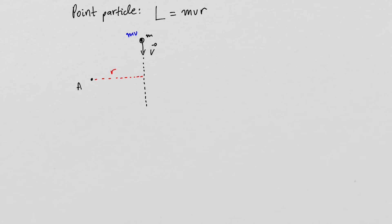Where can we see such behavior? Here we don't really have rotation in the common sense of the word — there is no object rotating. However, this particle can be in motion around point A in some sort of circular trajectory. At any fixed moment of time, the particle is essentially moving along a straight line, and the next moment the velocity changes direction. This type of behavior is observed for planets orbiting around stars or for satellites orbiting around planets.